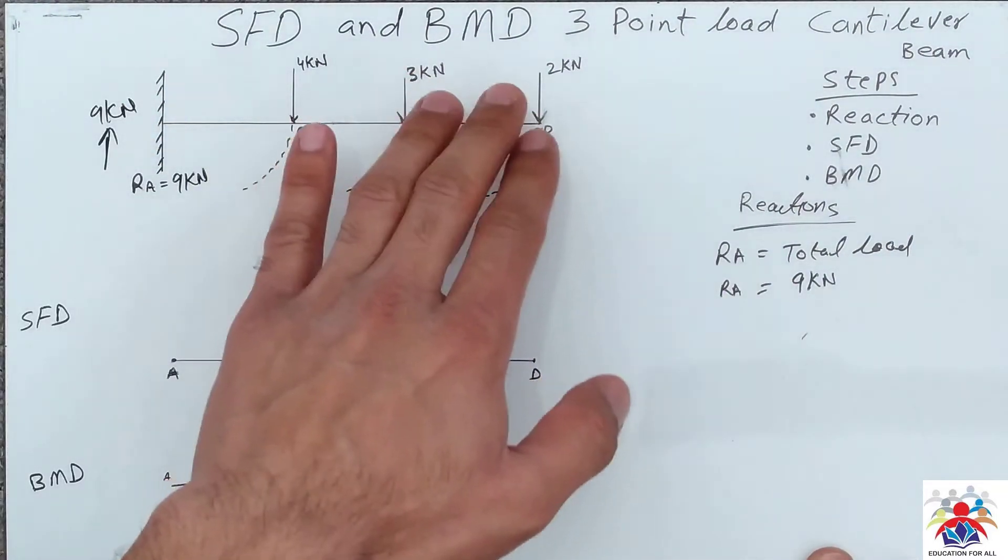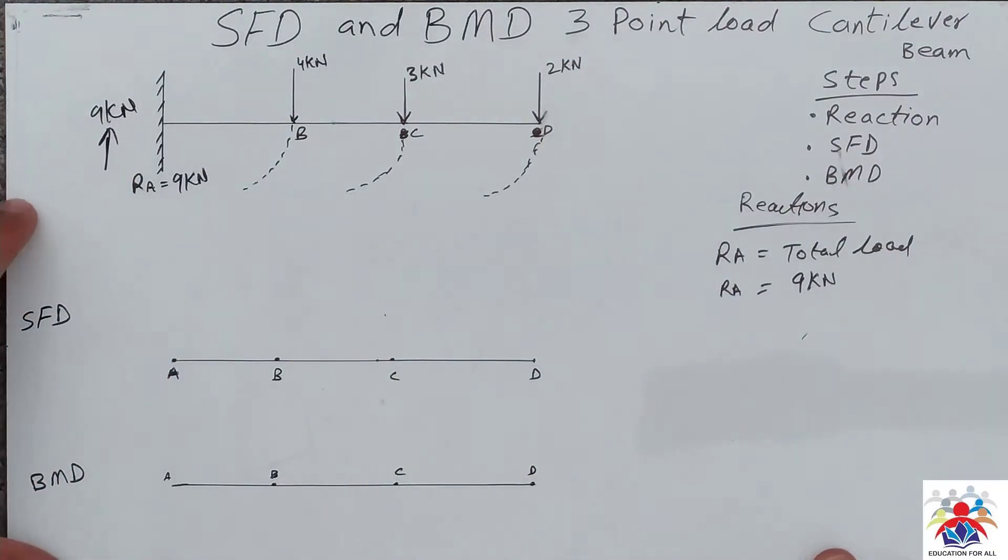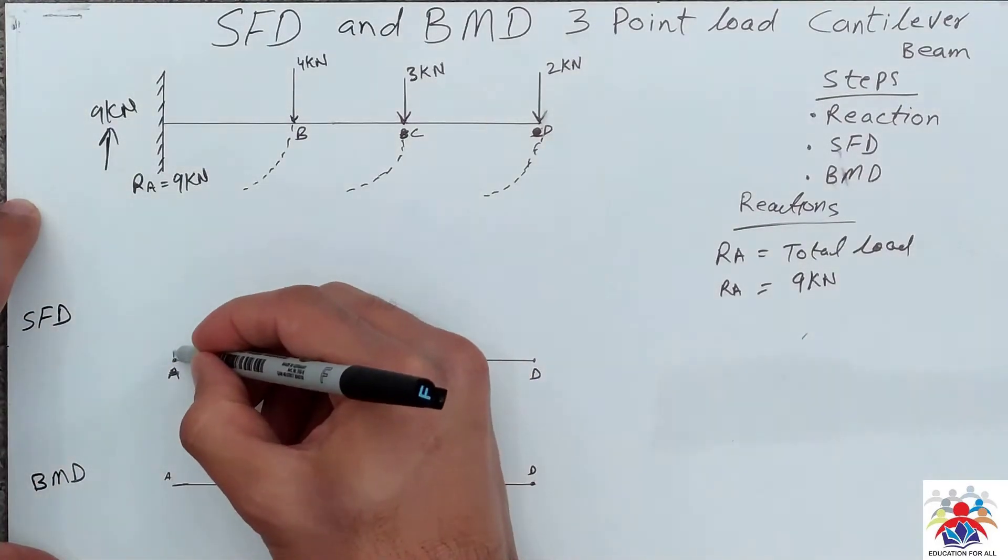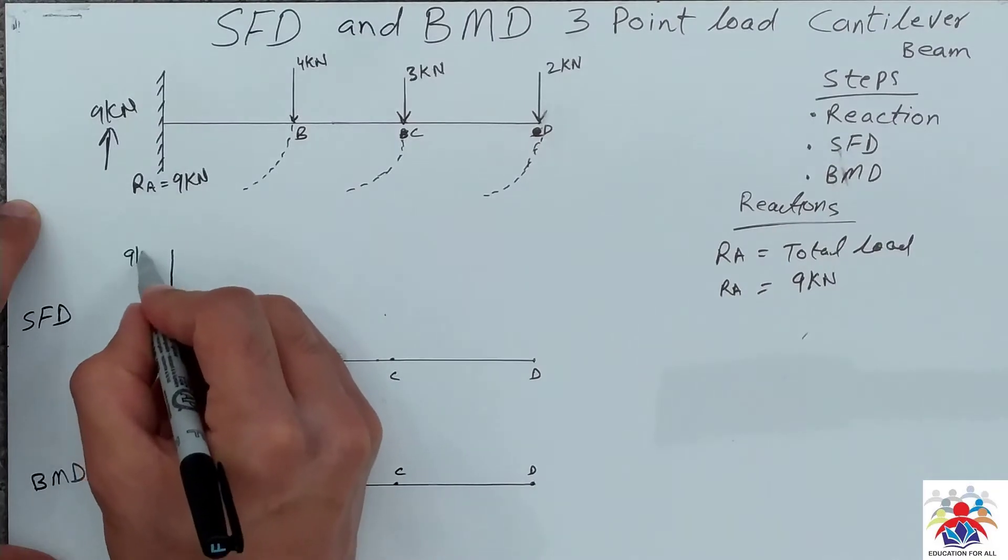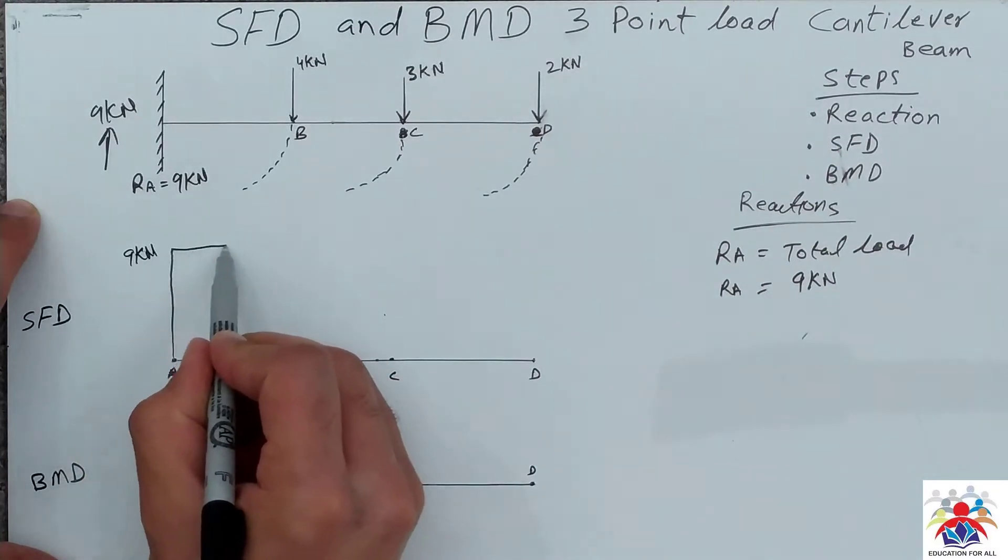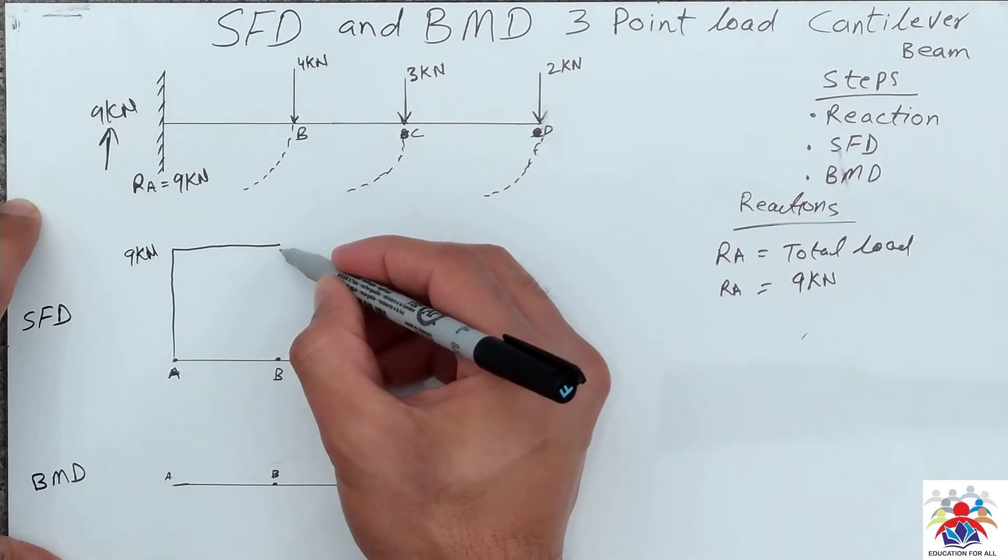Based on this 9 kilonewton and all these other numbers we can draw the shear force diagram. 9 kilonewtons will go upwards, so it's 9 kilonewtons. Then we move on to point B. Once we get to point B we have to go down 4 kilonewtons.